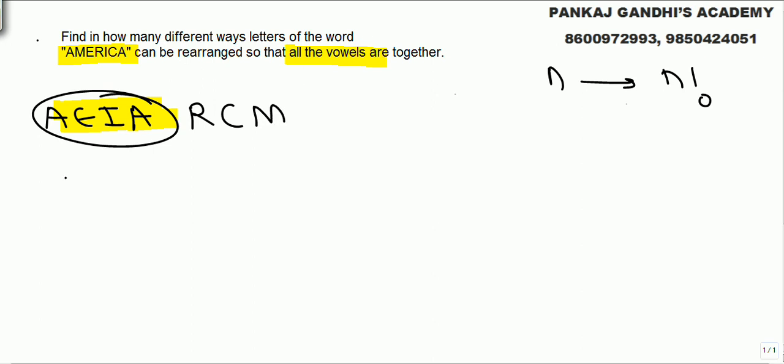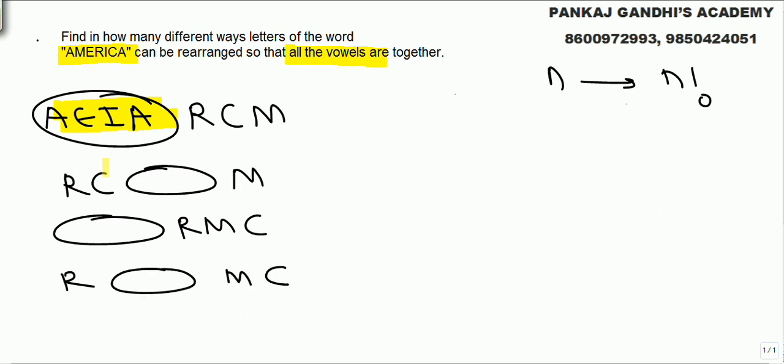Now what can happen is, let's say R, C, these vowels together, M. It can be vowels together R, M, C. It can be R, C, these together, M. Various possible things are there.